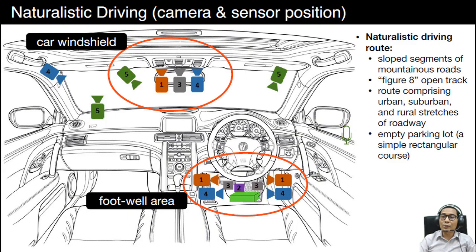The first approach used by the researcher to perform the pedal error study is naturalistic driving. It is a study undertaken to provide insight into driver behavior during everyday trips by recording details of the driver, the vehicle, and the surroundings through unobtrusive data gathering equipment and without experimental control, or using event-triggered video recorded during the naturalistic driving to investigate the factors that might cause the pedal errors. Naturalistic driving has been done by several researchers at slope mountainous roads, a figure-8 open track, at roadways comprising urban, sub-urban, and rural stretches.